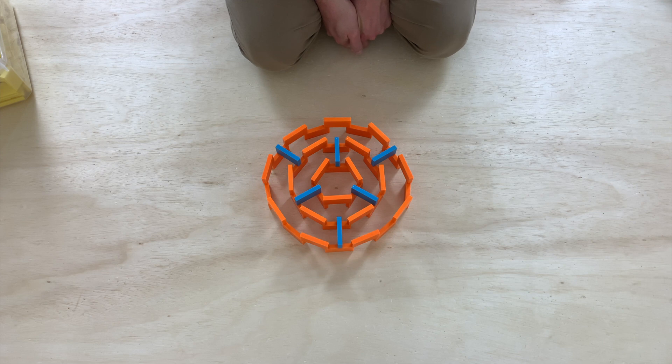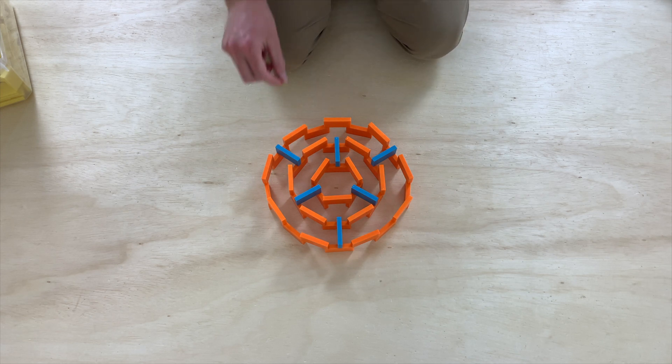Okay, now we've made our outer circle. So we can go ahead and remove the blue dominoes that we see here because we won't need them anymore.